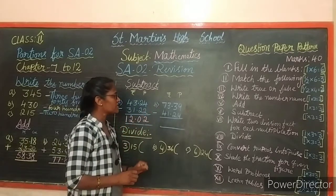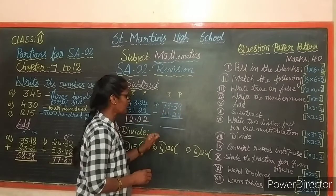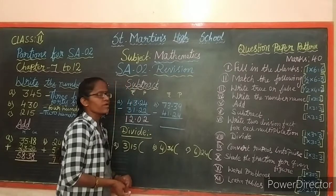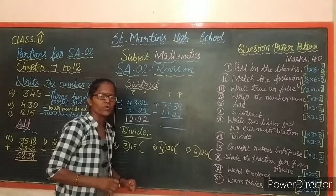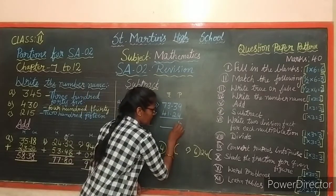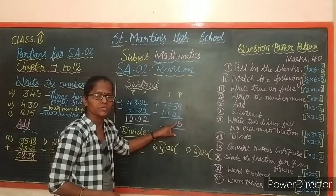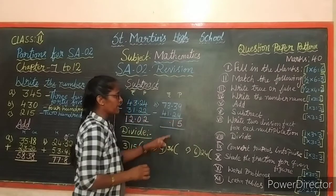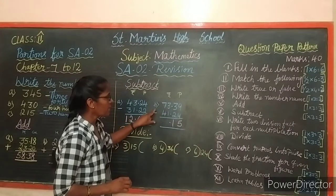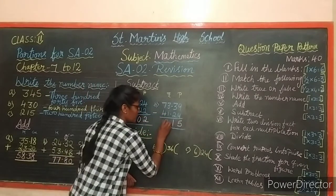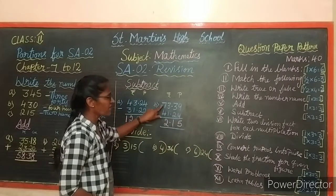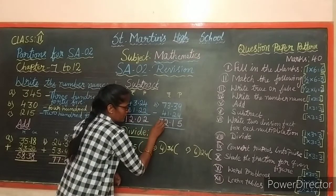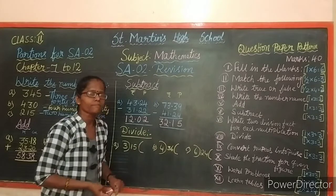Second sum: 73 rupees 39 paise minus 41 rupees 24 paise. Ones place: 9 minus 4 equals 5. Then 3 minus 2 equals 1. Keep a full stop. Rupees: 3 minus 1 equals 2, and 7 minus 4 equals 3. The answer is 32 rupees 15 paise.